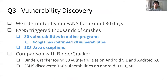We intermittently ran FANCE on six smartphones for around 30 days. FANCE triggered thousands of crashes. After deduplication, FANCE discovered 30 vulnerabilities in native programs, of which Google has confirmed 20. We also discovered 138 Java exceptions. FANCE found 89 vulnerabilities on Android 5.1 and Android 6.0, and 168 vulnerabilities on Android 9.0.0 R46. We believe that FANCE is superior over Bandcracker, as Android security has been improving over the years.